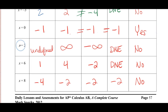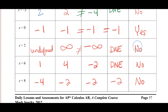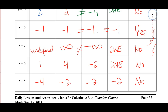At x = 2, the left limit is infinity and the right limit is negative infinity. The two-sided limit does not exist — not only because left doesn't equal right, but also because infinity is not a real number. Graphically this function has a vertical asymptote; it's not continuous. At x = 6, the left and right limits do not equal each other, so the two-sided limit does not exist.